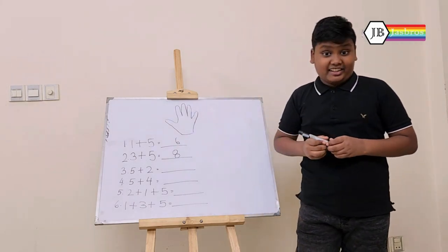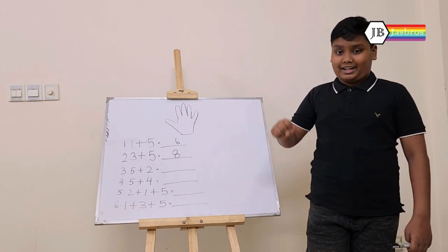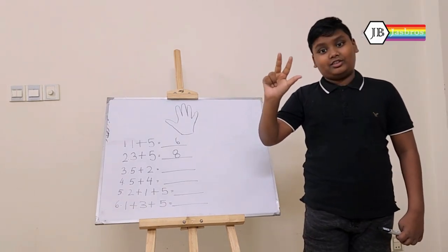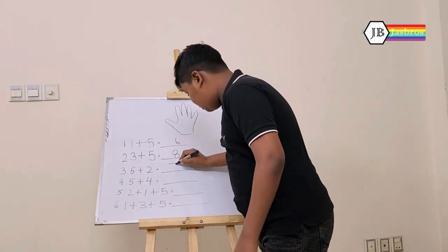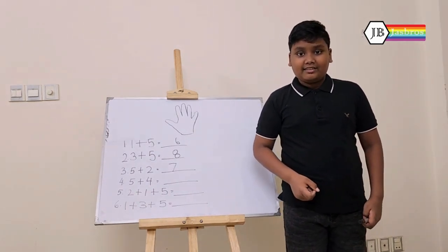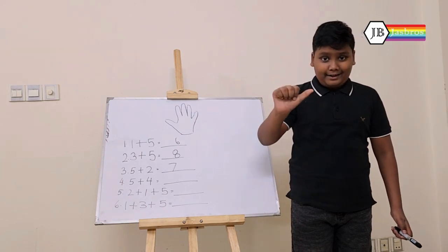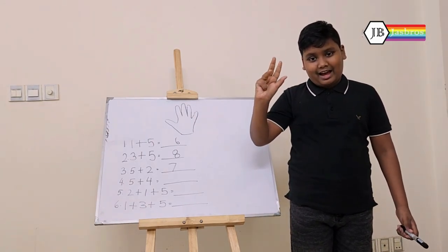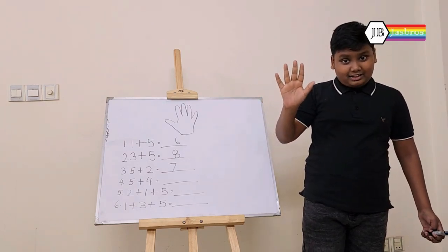The next question is 5 plus 2. Let's take 5 and plus 2. So the answer is 7. The next question is 5 plus 4. So let's take 5 and add 4 — 1, 2, 3, and 4. So the answer is 9.